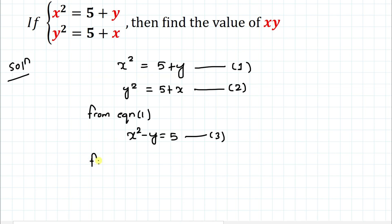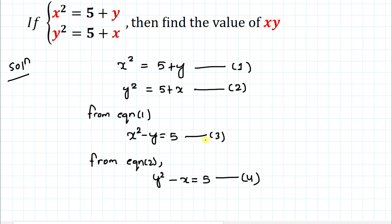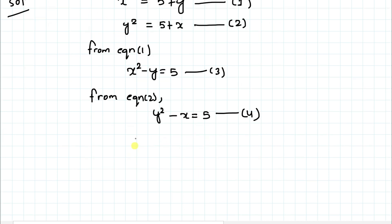Similarly, bringing x to the left hand side in equation 2, we get y squared minus x equals 5 — let's call this equation 4. Both equation 3 and equation 4 have 5 on the right hand side, so we can equate them.